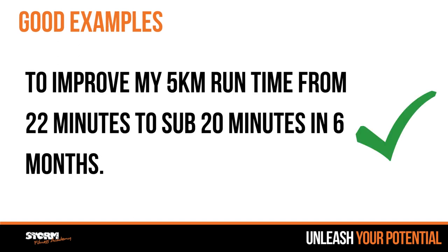A better example would be: 'to improve my five-kilometre run time from 22 minutes to sub-20 minutes in six months.' This is a very, very specific goal — not left open to interpretation whatsoever. We can definitely measure it, because if somebody goes for a 5K run, we can measure that with a fitness tracker. And is it achievable? Well, if we look at the time frame, we're knocking two minutes off in six months, so we can assume it's potentially possible.